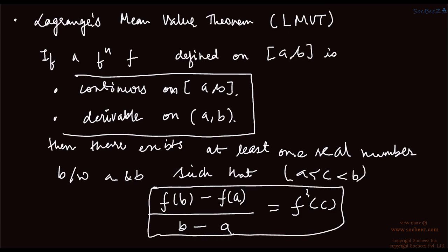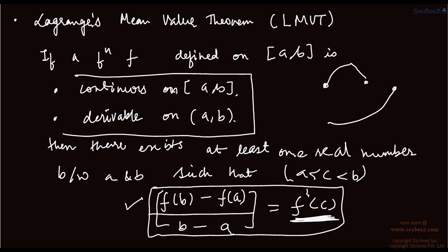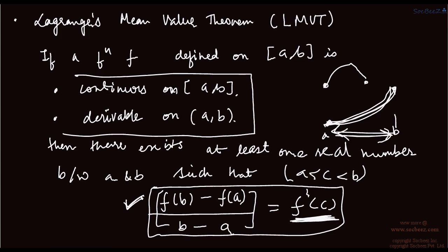In this equation we are using the differentiation part: f-dash(c) equals f(b) minus f(a) upon b minus a. The function value difference is divided by the interval length b minus a, giving you the mean value. That is why this is called the Lagrange Mean Value Theorem. Here we complete our application of derivatives.